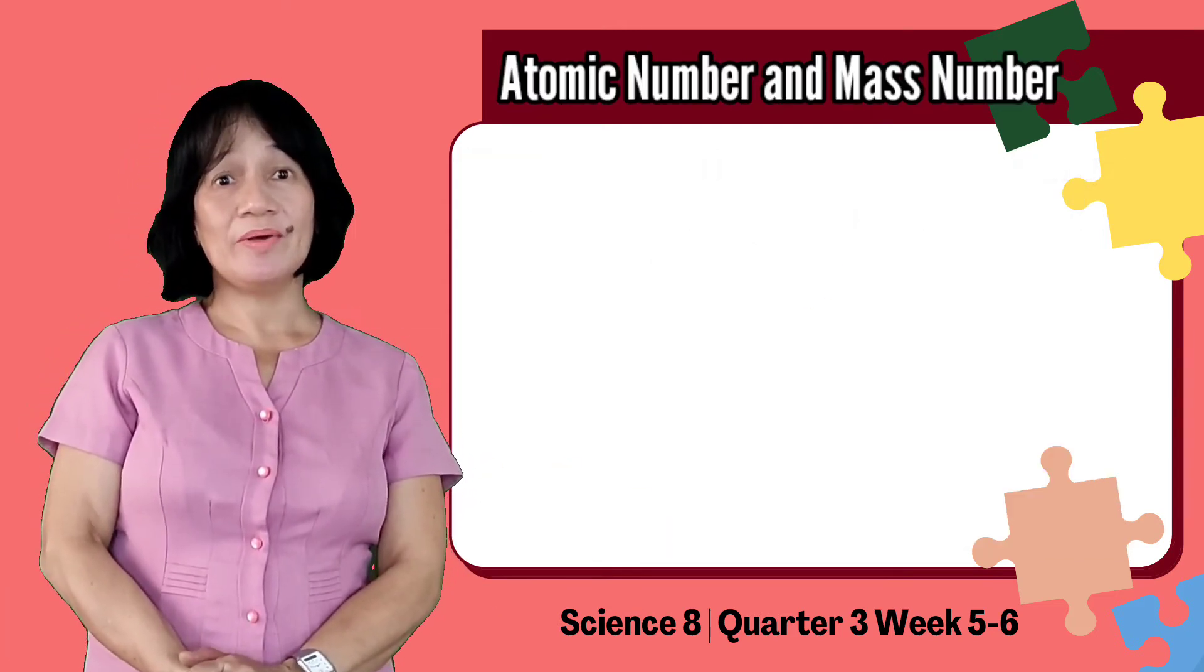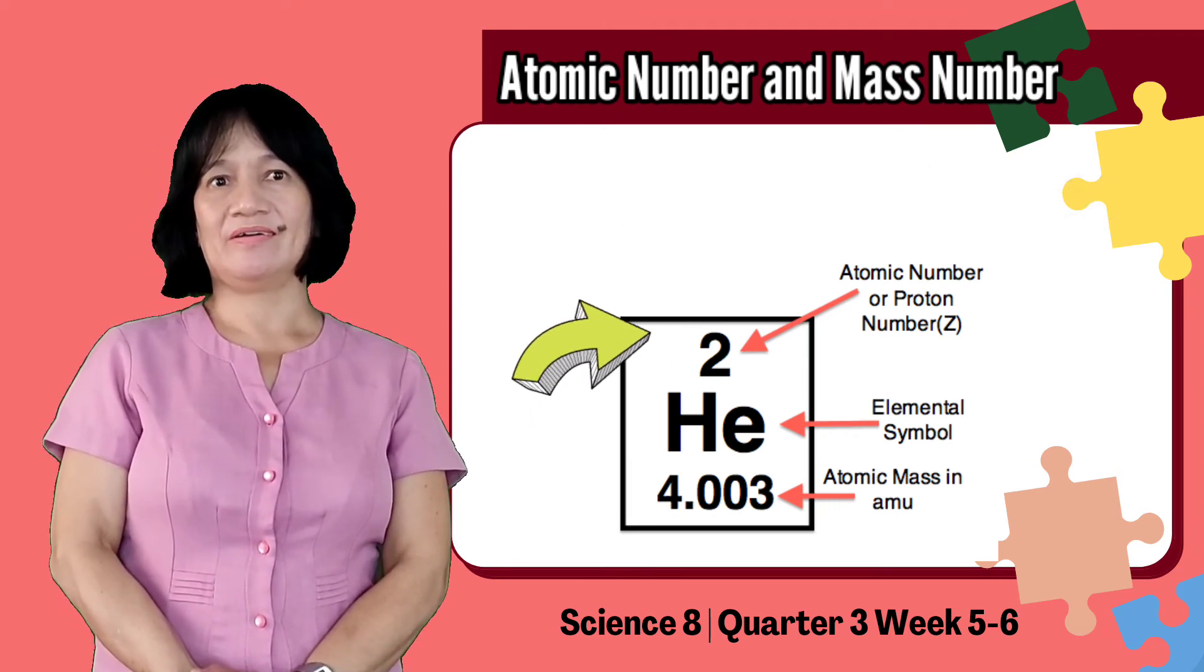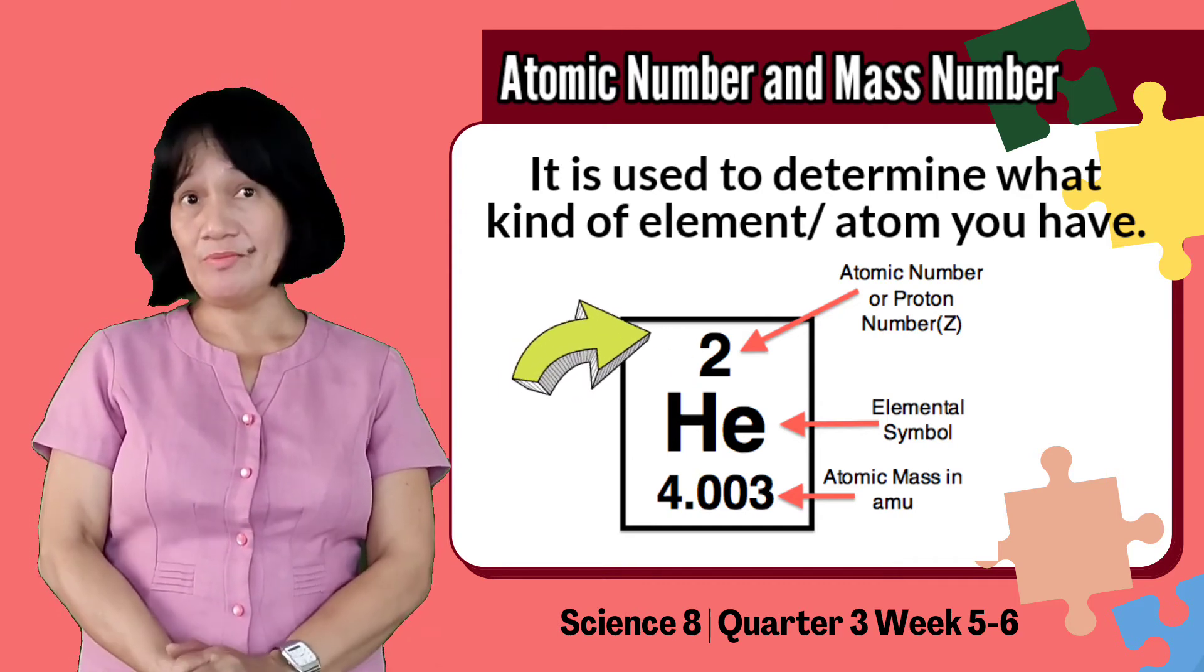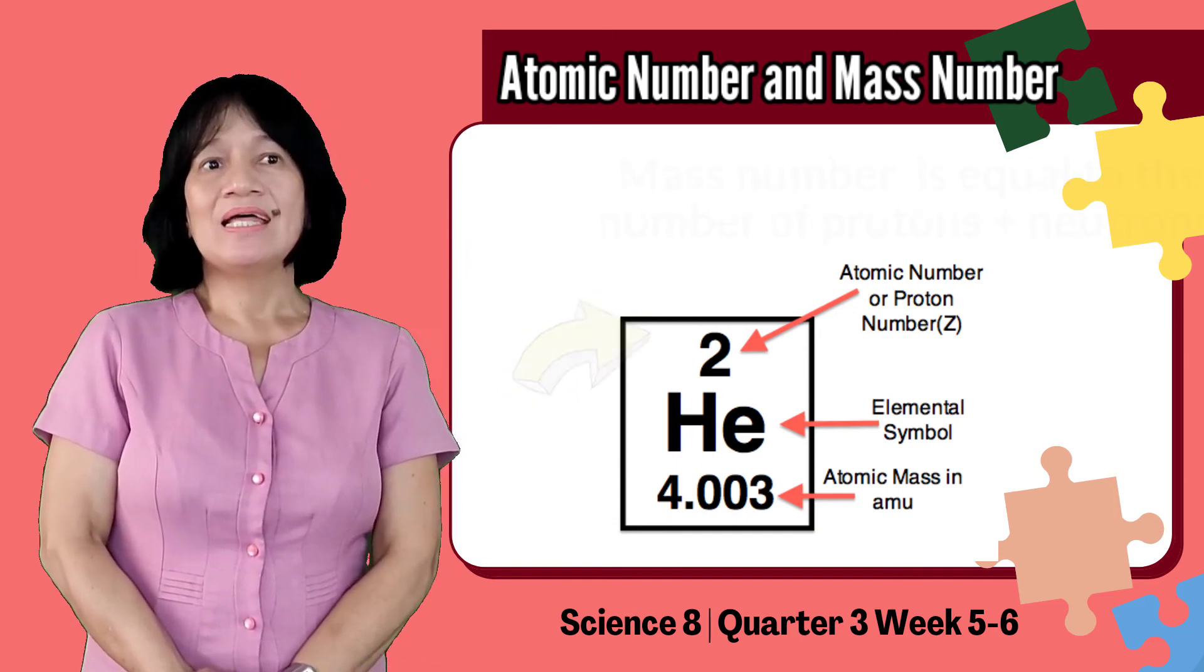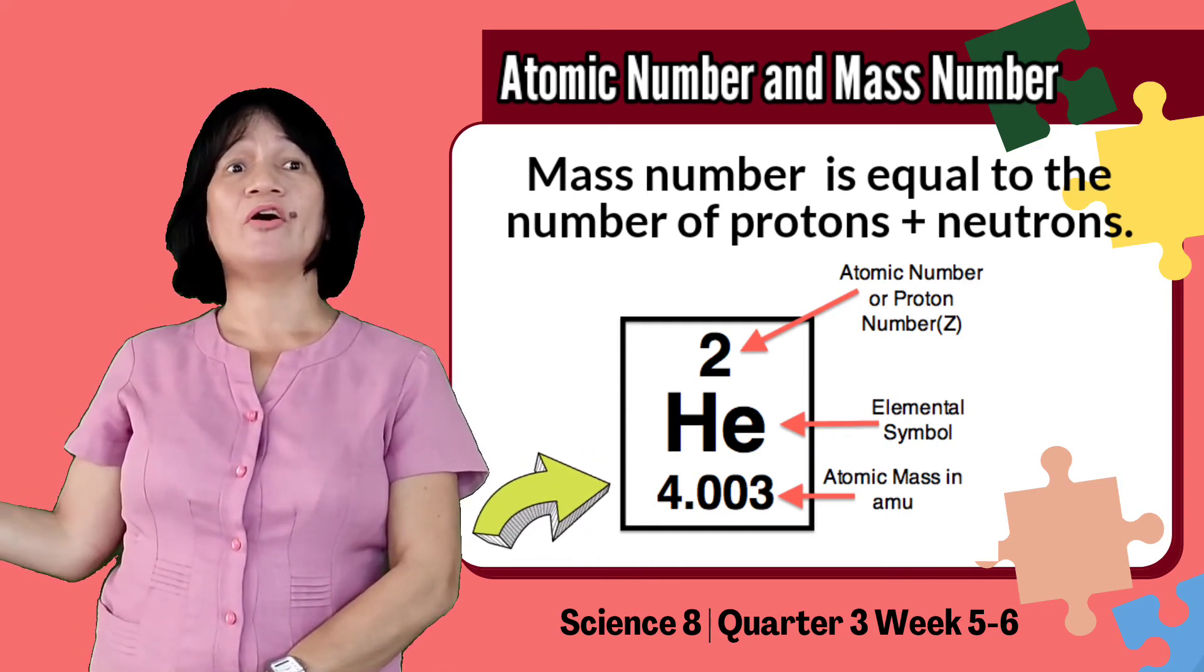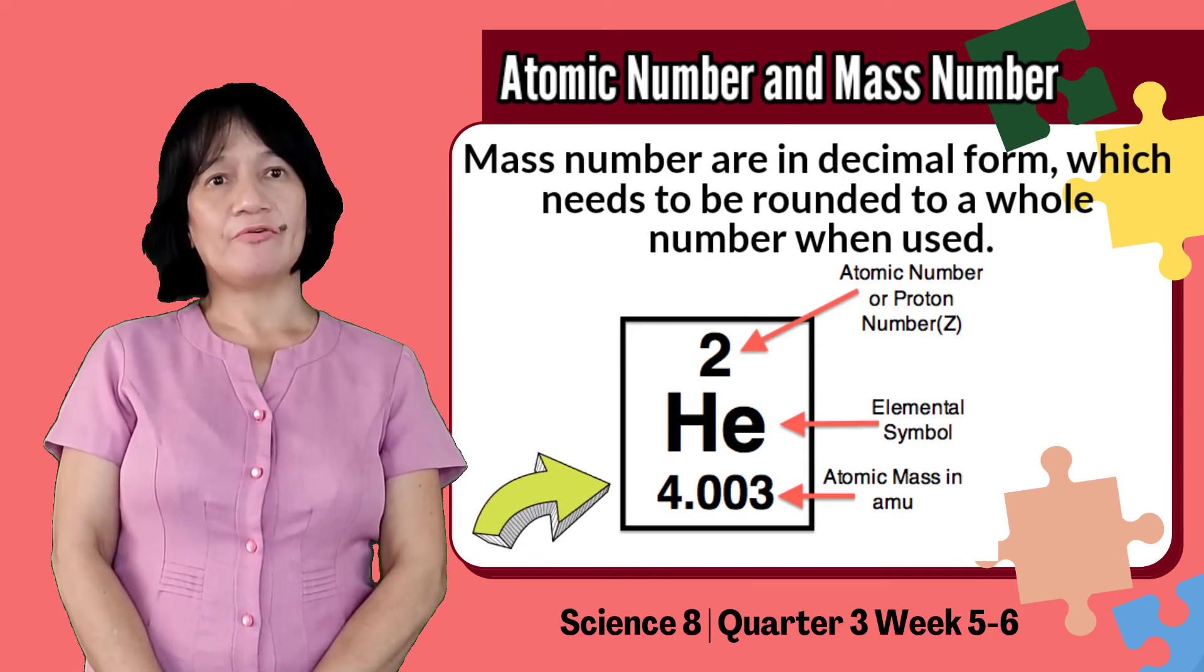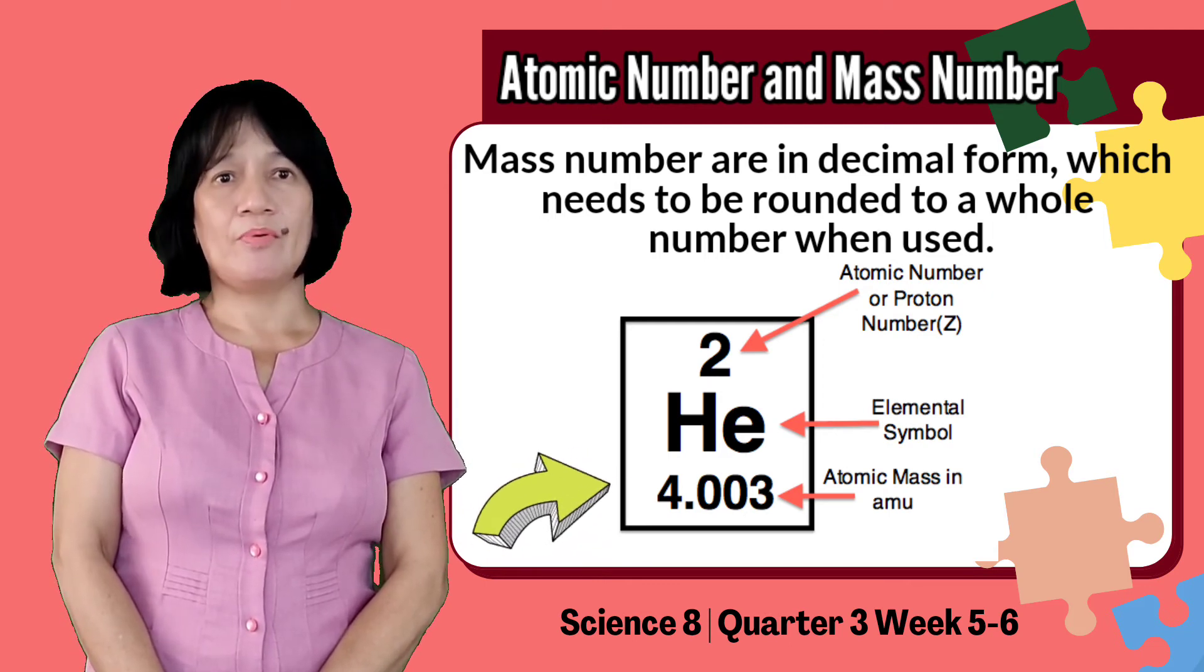And now, let us tackle atomic number. Atomic number is the number of protons. It is always a whole number. It is used to determine what kind of element or atom we have. Furthermore, it tells us the number of electrons in a neutral atom. Next is the mass number. It is equal to the number of protons and neutrons. It is equal to the mass of the nucleus. Mass numbers are in decimal form, which need to be rounded to a whole number.